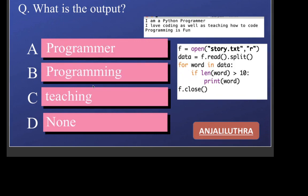Next, we have opened the file in read mode, read the data as a string, and used split(). What split does is take the full data as a string and convert it into a list, splitting by default on spaces — so each word becomes one element in the list.